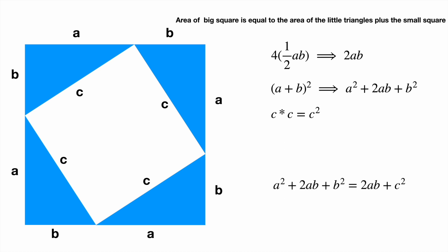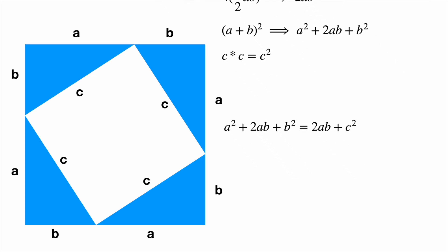Algebraically, it looks like this. With some simple middle school algebra, we get the final result of a squared plus b squared equals c squared.